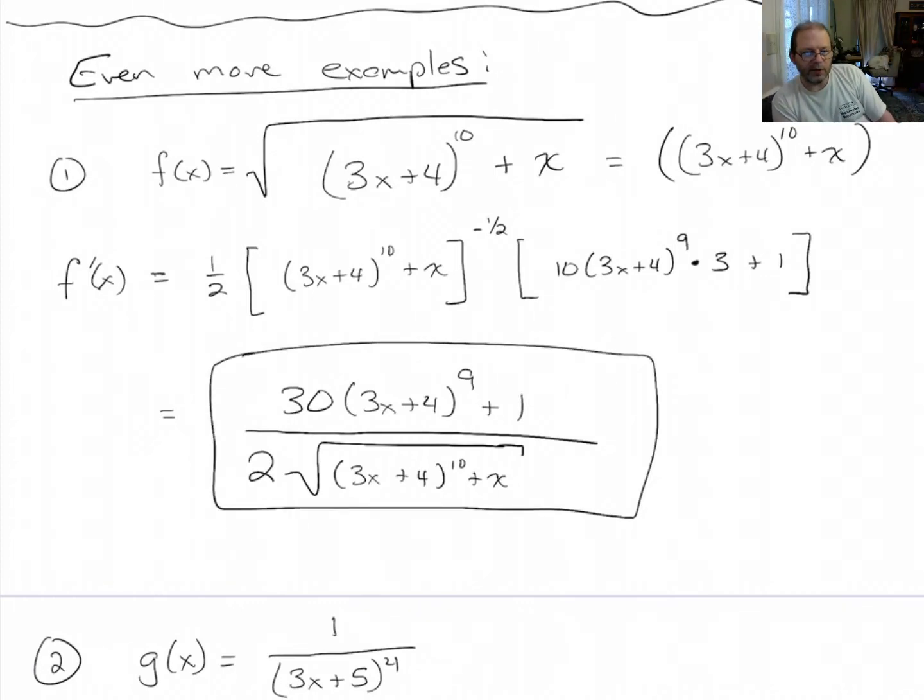It might be tempting to try to cancel that 30 and 2, but you can't do that because there's a 1 down here. So that's it.